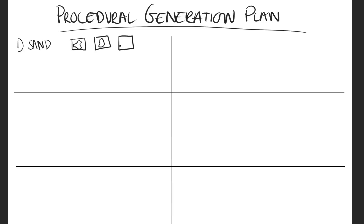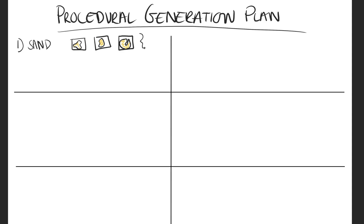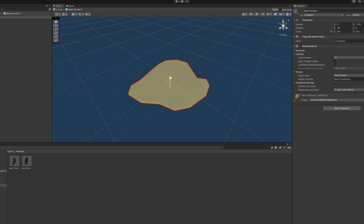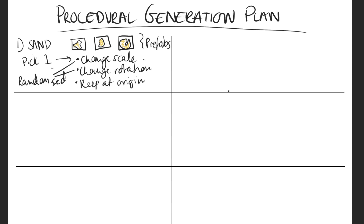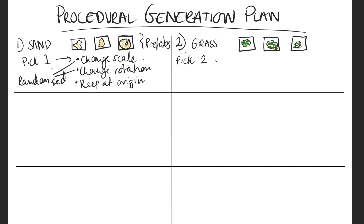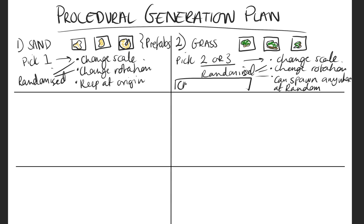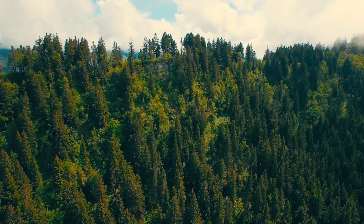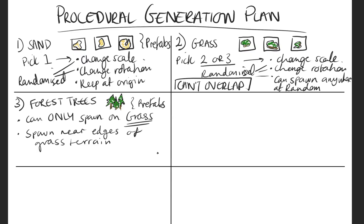Step one would be the sand. I wanted to create a handful of prefabs of different shaped terrain and only one of them would be picked, then alter the scale and rotation between some random values and it would always spawn at the origin. Step two would be the grass — a similar thing, but two or three terrain objects would spawn anywhere between a set range, meaning they cannot overlap. Step three would be the forest trees, which would only be able to spawn on grass, aiming to spawn near the edge of the terrain.